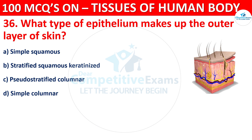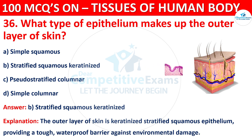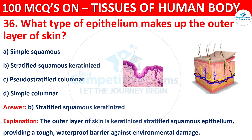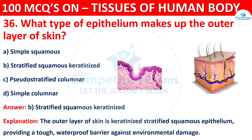The correct answer is B, that is Stratified Squamous Keratinized. The outer layer of skin is keratinized stratified squamous epithelium, providing a tough, waterproof barrier against environmental damage.